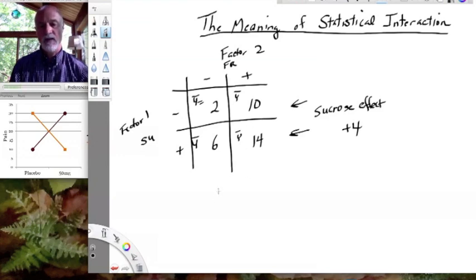And likewise, we can examine the fructose effect. So going from a minus fructose to a plus fructose state, going from here to here, we add 8, right? And if we go from a minus fructose state down here, where we have sucrose, and we add fructose so that we now have both, we also go to be plus 8. So what is the fructose effect? The fructose effect is obviously plus 8.